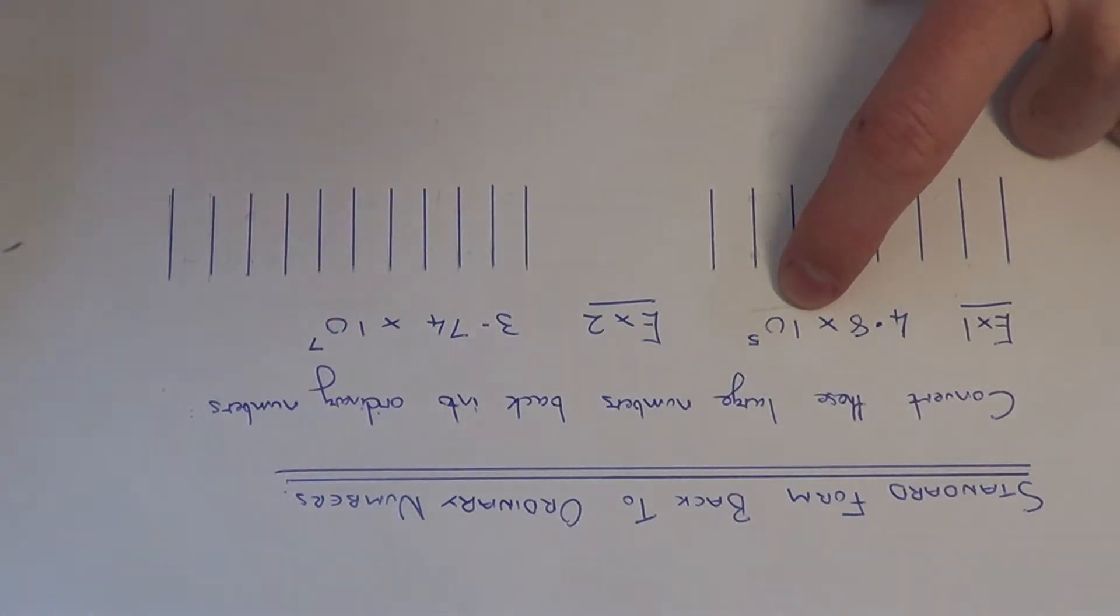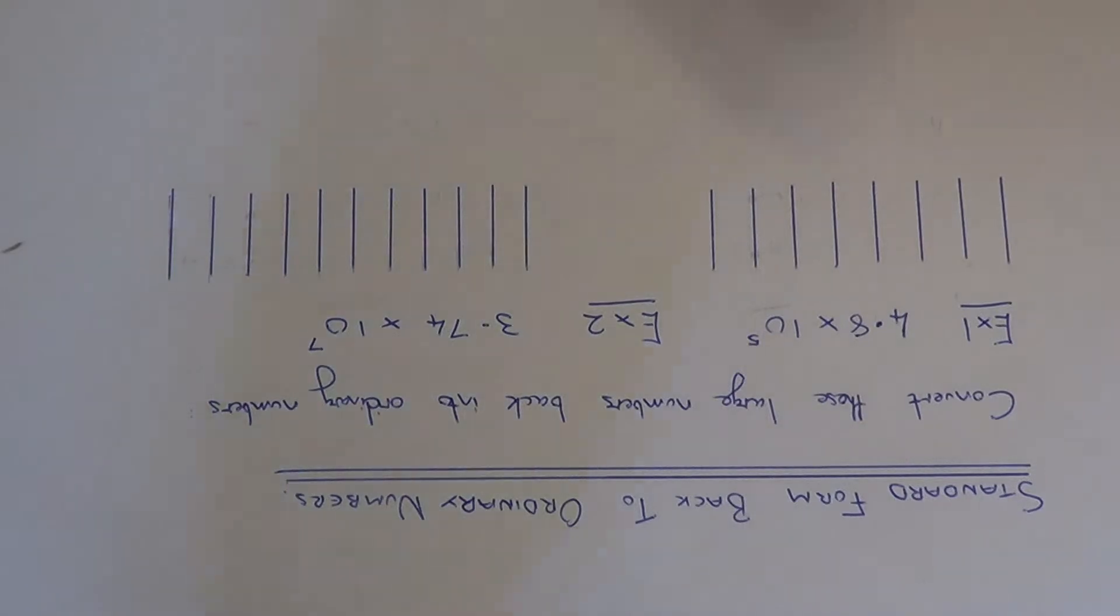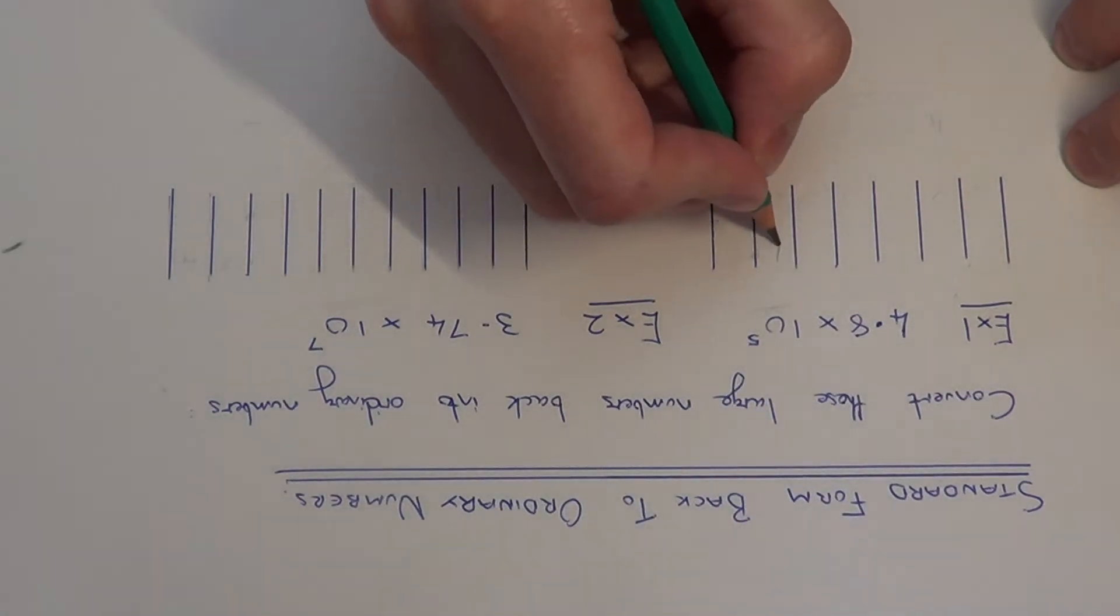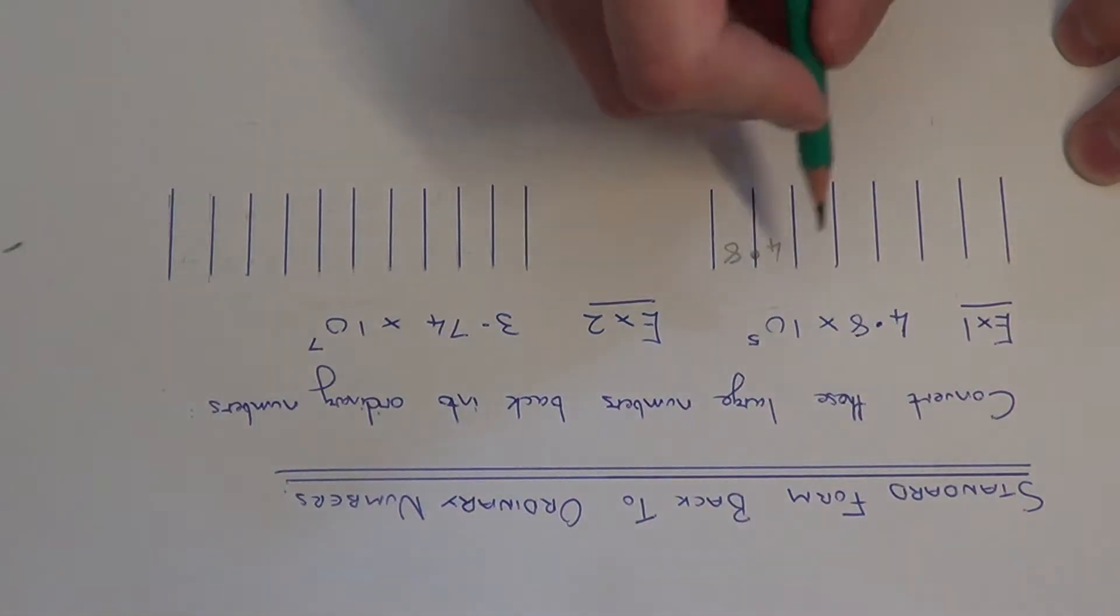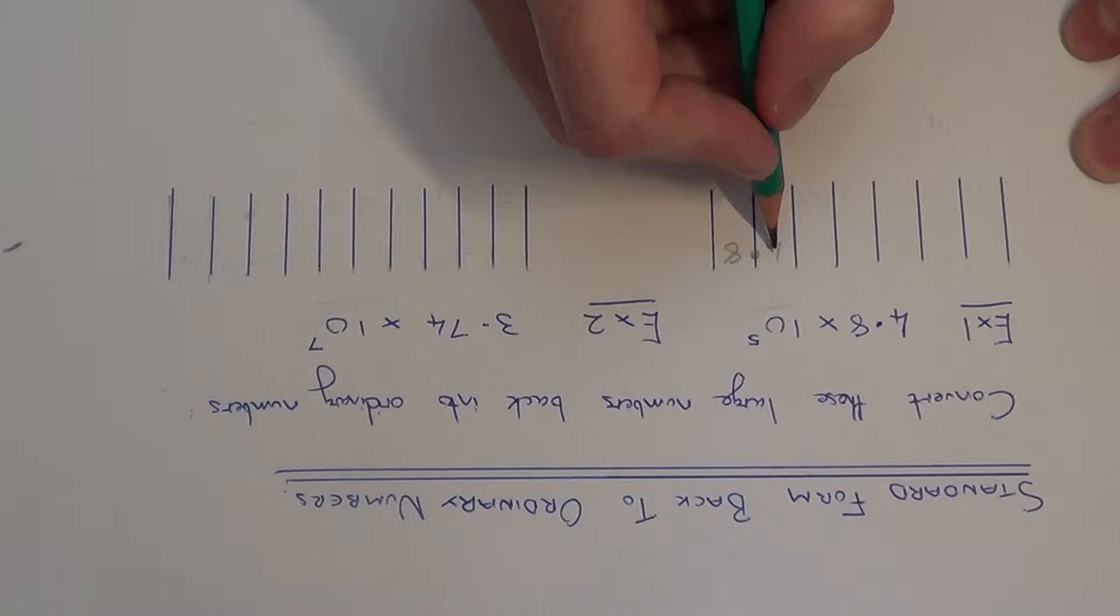If you think about how you multiply by 10, you need to move the digits to the left. So we need to move all the digits 5 places to the left. If we put 4.8 into some columns, we just need to move all the digits 5 places to the left.